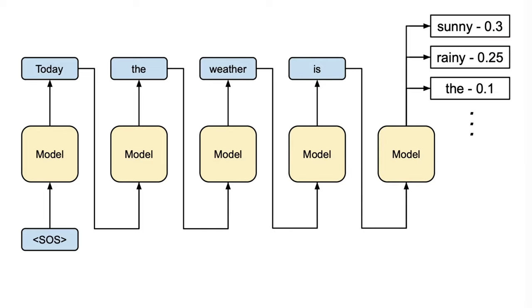Now, we could simply select the word with the highest probability, a technique known as greedy decoding, which for the sentence displayed here, 'Today the weather is,' would result in selecting the word 'sunny.'